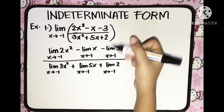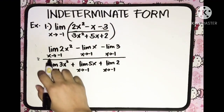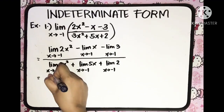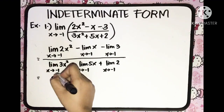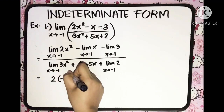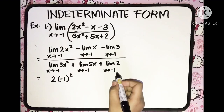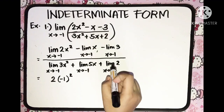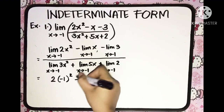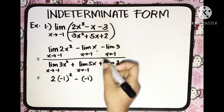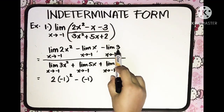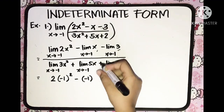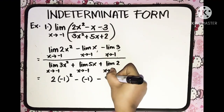Applying the theorems, in the numerator, the limit of 2x squared as x approaches negative 1 gives us 2 multiplied by negative 1 quantity squared. Next, minus the limit of x as x approaches negative 1, so we have minus negative 1. Then minus the limit of 3 as x approaches negative 1 — limit of a constant — so it is equal to 3, so we write minus 3.